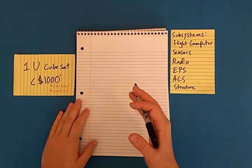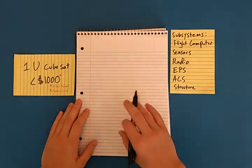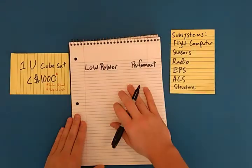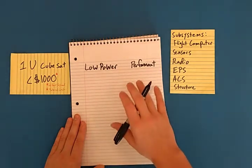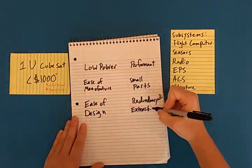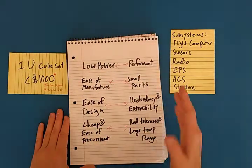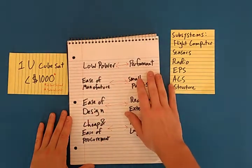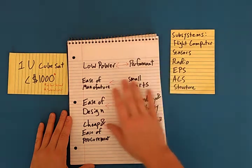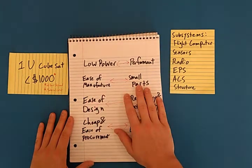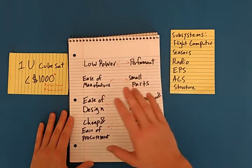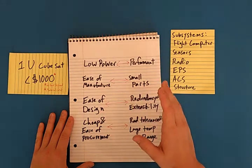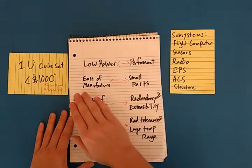Before I go into any detail about budgets, let's talk about the trade space. I was able to find roughly four big trade-offs. Starting from the top, low power versus performance. This is a pretty obvious trade-off between any computational system. Ease of manufacturing against small parts. Of course, this CubeSat is designed to be small, but it is much easier to manufacture larger parts.